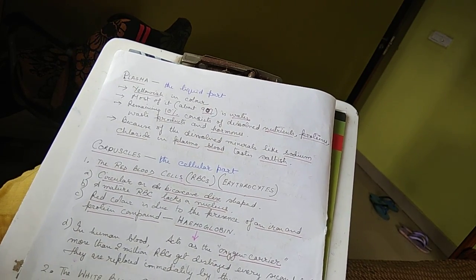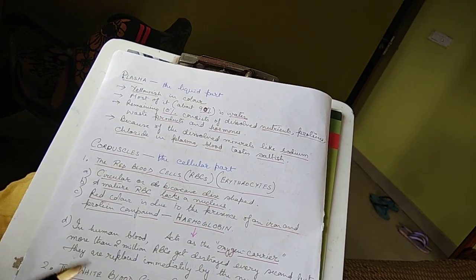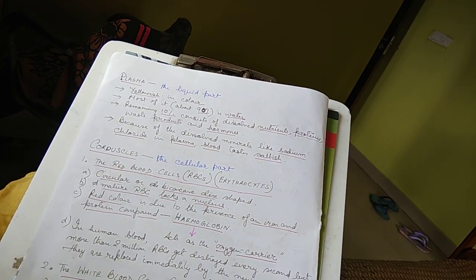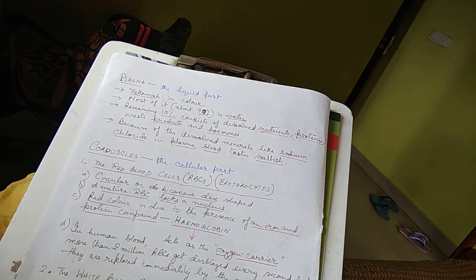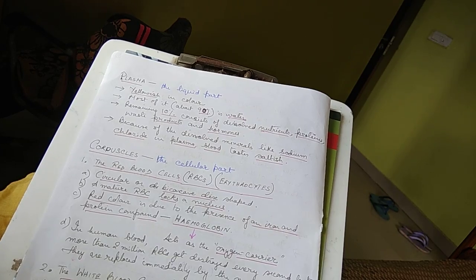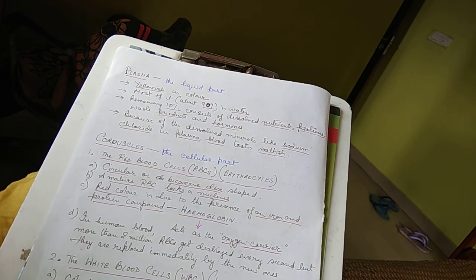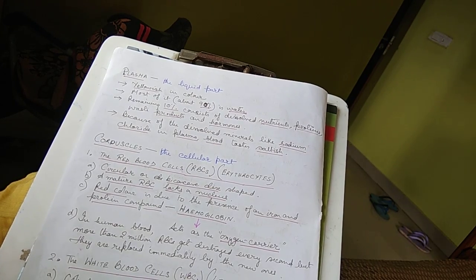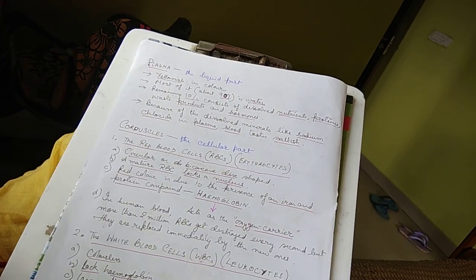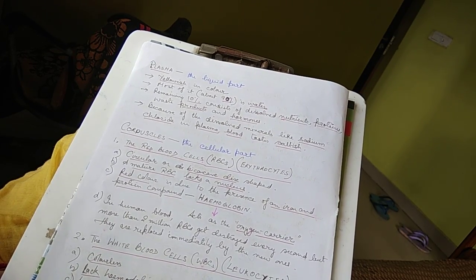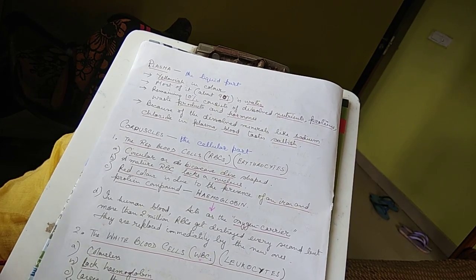Corpuscles, the cellular part - the first cell type is erythrocytes, that is, the red blood cell or RBC. The red blood cells are circular or biconcave disc type. A mature RBC lacks a nucleus. Red color is due to the presence of iron and protein compound that is called hemoglobin, which acts as an oxygen carrier. In human blood, more than 2 million RBCs get destroyed every second, but they are replaced immediately by the new ones.